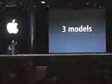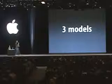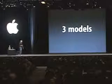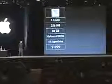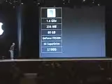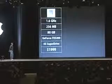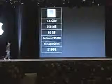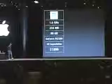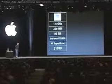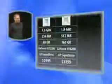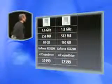It's going to come in three models. The first model: a single 1.6 gigahertz G5 chip, a quarter gigabyte of memory, 80 gigabytes of hard drive, GeForce 5200, 4X SuperDrive — $1,999. The second model: a 1.8 gigahertz processor, stepping up 200 megahertz.